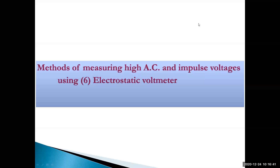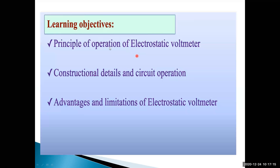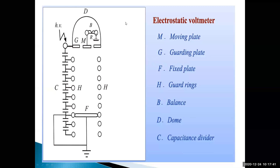For AC and impulse voltage measurement, only some differences exist - the scale and pointer differ compared to the basic measuring instrument. Today we concentrate on: first, the principle of operation of electrostatic voltmeter; second, constructional details and circuit operation; and third, advantages and limitations of electrostatic voltmeter. All of you draw this diagram.